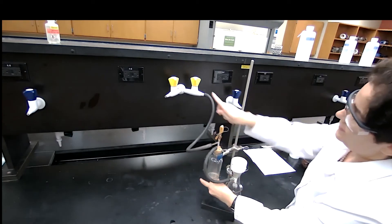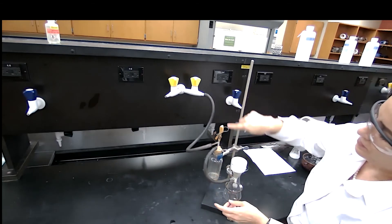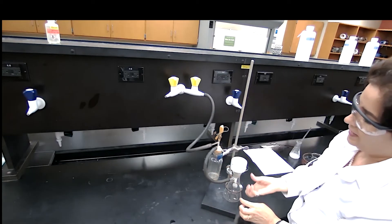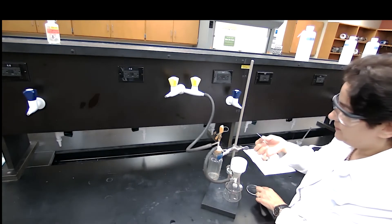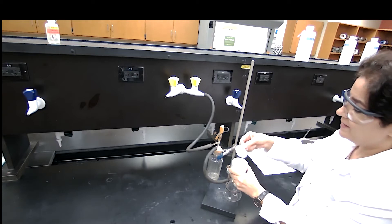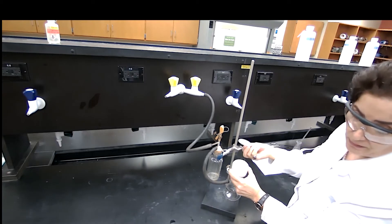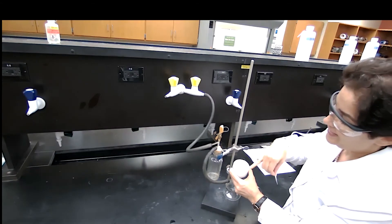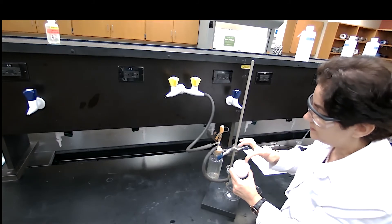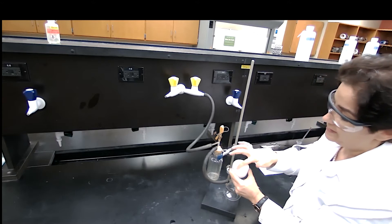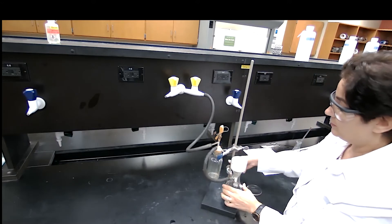We already have the mass of the filter paper, going to place it in the Buchner funnel. You see that Buchner funnel has some large openings. We cover the openings with the filter paper, making sure that that is covered completely.